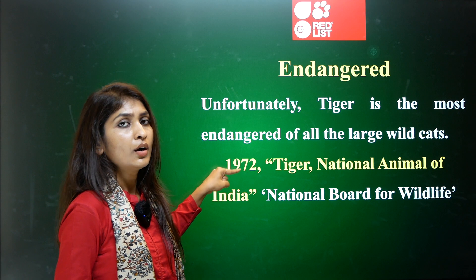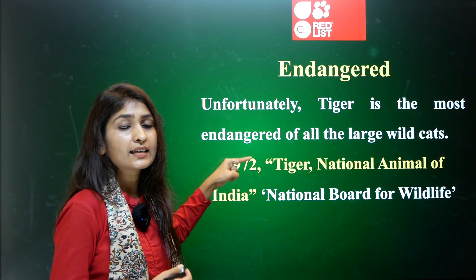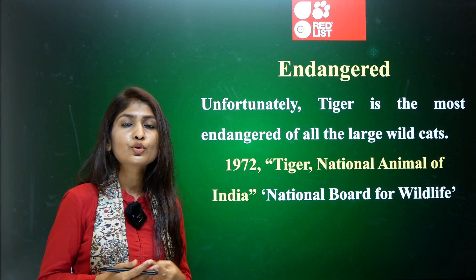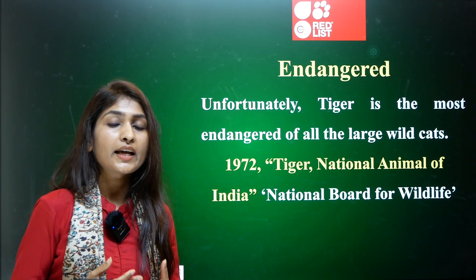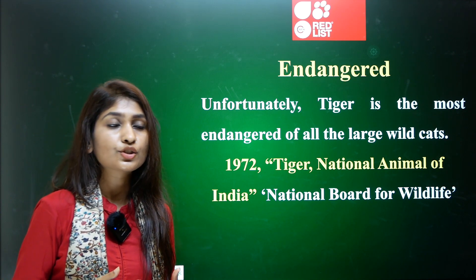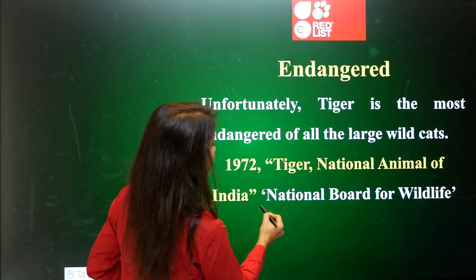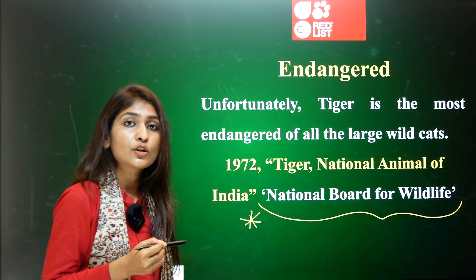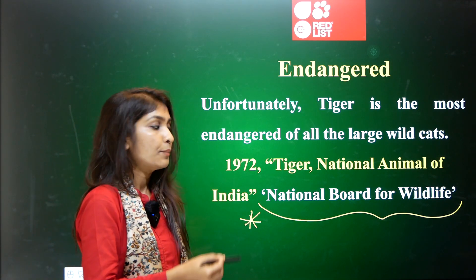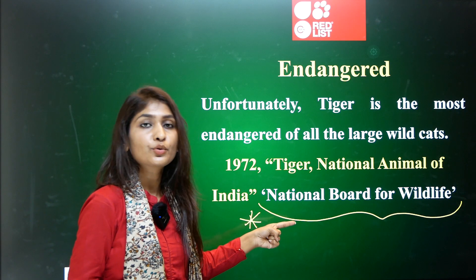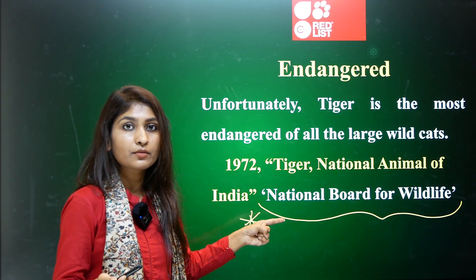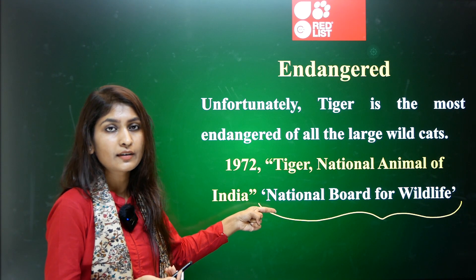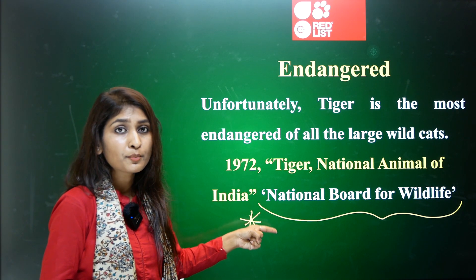In 1972, to address the pathetic situation of the tiger population, India declared the tiger as the national animal based on the recommendations of the National Board for Wildlife. The National Board for Wildlife, previously called the Indian Board for Wildlife, is a statutory body constituted under the Wildlife Protection Act of 1972. This board is advisory — it advises on the protection and conservation of wildlife — and is headed by the Prime Minister.